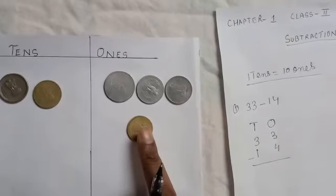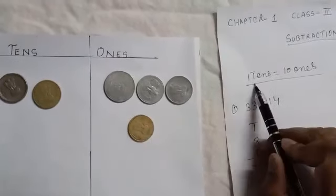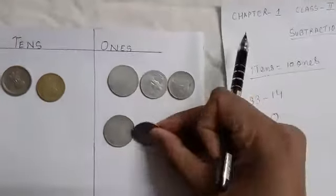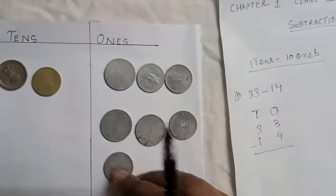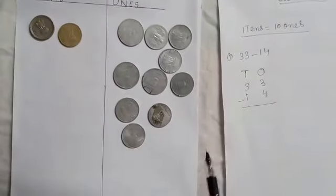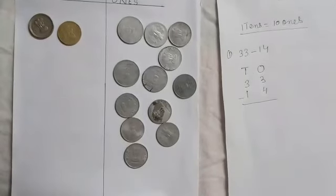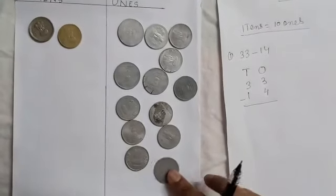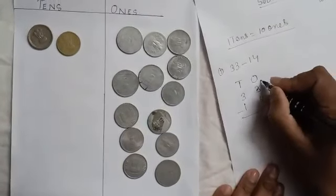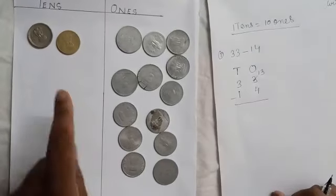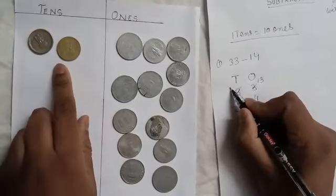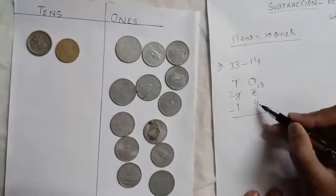So we rearrange 1 ten into ones: 1, 2, 3, 4, 5, 6, 7, 8, 9, 10. Now we have 13 ones. The 3 ones is crossed out and replaced with 13. We carried 1 ten from the tens column, so now only 2 tens remain.